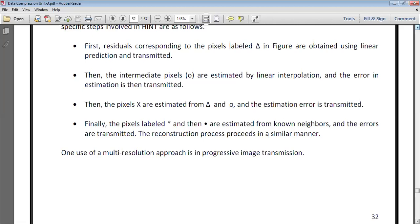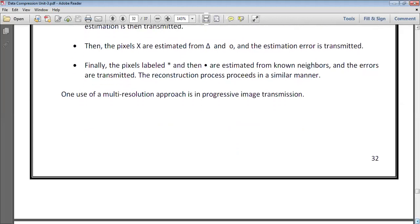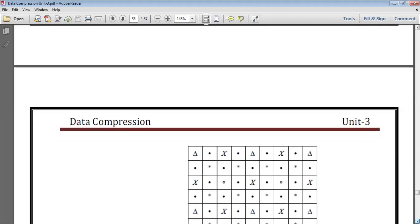What will be the estimation error? This always after each step is transmitted. Finally, star and dot are estimated from the nearby pixels, and the error is again transmitted. This process will be done until the whole pixels are covered.